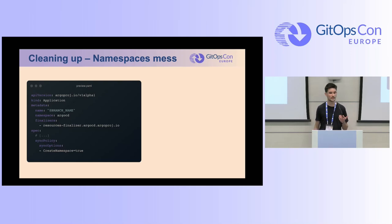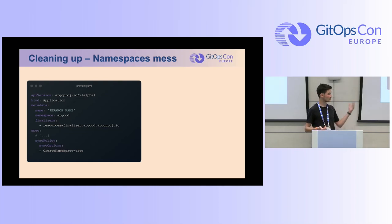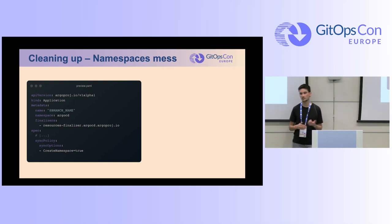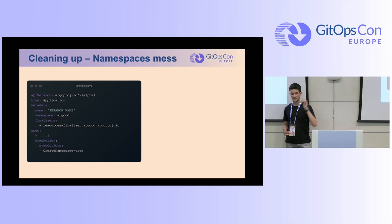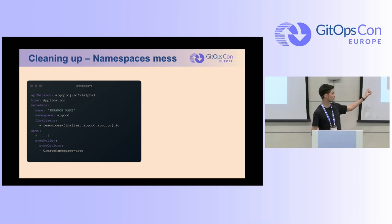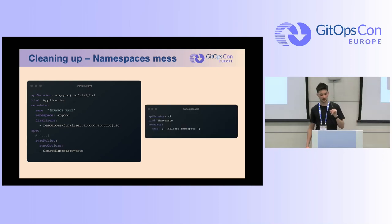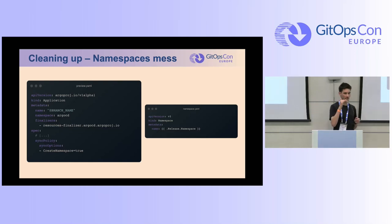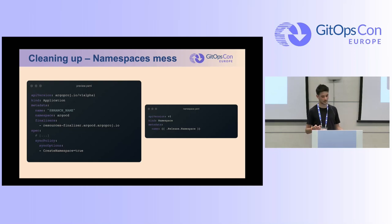About namespace management: as namespaces accumulate — if you release 20 or more pull requests per week — kubectl get namespaces becomes a mess of entries. With Argo you can create a namespace easily with one option, but you cannot delete it easily by default. The solution is to create a namespace resource within your preview environment definition. Then when you delete the preview environment file, Argo goes through all resources — secrets, everything — deletes them, and finally deletes the namespace itself, so you don't accumulate empty namespaces in your cluster.